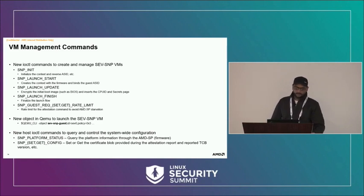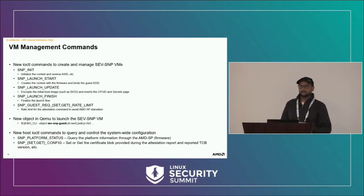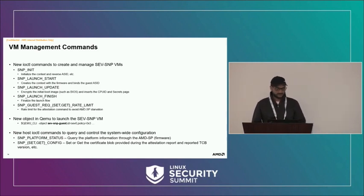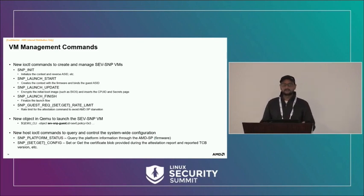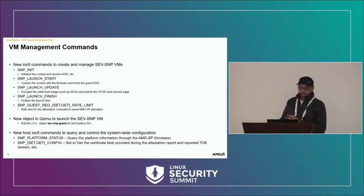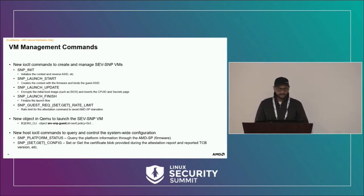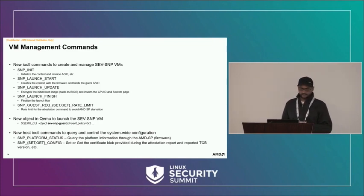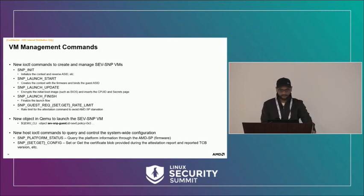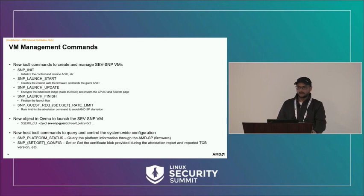For QEMU support, we added a new object called sev-guest — you add it to the QEMU command line and the VM automatically becomes an encrypted guest. For SNP, you use sev-snp-guest instead, and it launches as a SNP guest. There are also new ioctls for system-wide configuration such as platform status, which gives firmware version and related details. Additional ioctls allow getting or setting configuration used during attestation reports — all parameters and output information are in the SNP specification.